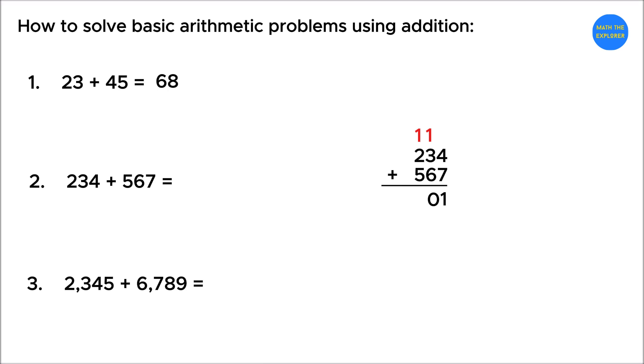Then add the hundreds place. 2 plus 5 is equal to 7, plus the carry over 1 equals 8. So the final answer to 234 plus 567 is 801.